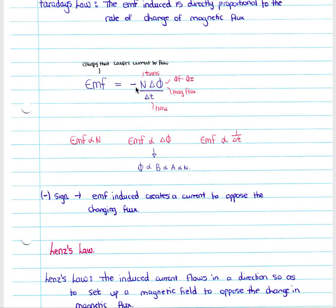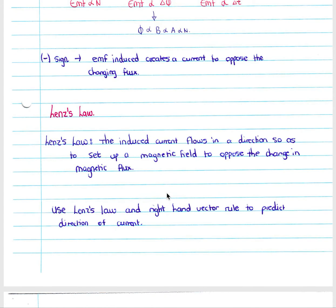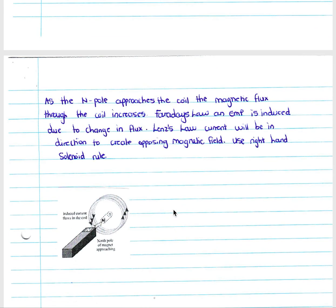The negative sign in our formula means the EMF induced creates a current to oppose the changing flux. We look at Lenz's law to work out the direction of current in the conductor. Lenz's law states that the induced current flows in the direction so as to set up a magnetic field to oppose the change in magnetic flux. We use Lenz's law and the right-hand solenoid rule to predict the direction of current. As the north pole approaches the coil, the magnetic flux through the coil increases, an EMF is induced due to the change in magnetic flux, and current flows in the direction to create an opposing magnetic field.